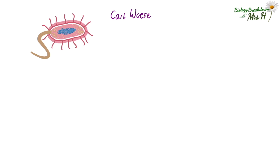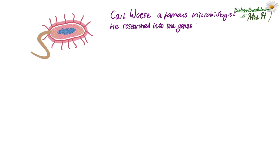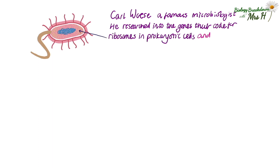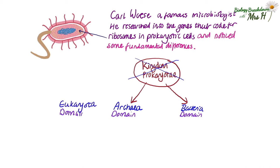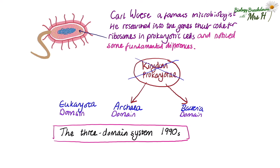In the 1990s a new classification idea was adopted by scientists thanks to Carl Woese, a famous microbiologist. He researched the genes that code for ribosomes in prokaryotic cells and noticed fundamental differences between organisms grouped in the kingdom Prokaryote. The differences were such that he divided the kingdom into Archaea and Bacteria. Another taxonomic level was needed, called a domain. As well as Archaea and Bacteria there is a third domain called Eukaryota. This is known as the three-domain system, and even though Woese discovered this in the 1970s, his theory was not accepted until the 1990s. These domains have since been added to the existing Linnaean system.